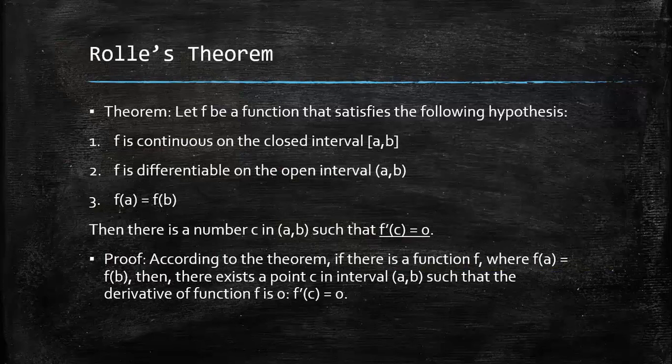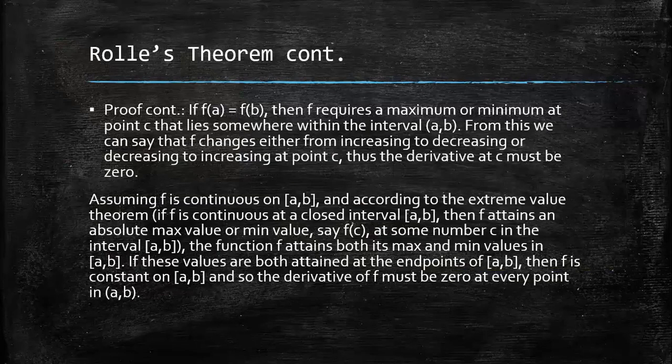So here we go with the proof. It's going to be long. According to the theorem, if there is a function f where f(a) is equal to f(b), then there exists a point c in interval (a, b) such that the derivative of function f is zero, f'(c) equals zero. If f(a) is equal to f(b), then f requires a maximum or minimum at point c that lies somewhere within the interval (a, b). From this, we can say that f changes either from increasing to decreasing or decreasing to increasing at point c. Thus, the derivative at c must be equal to zero.